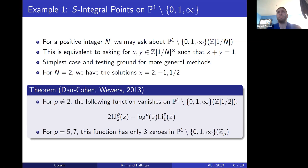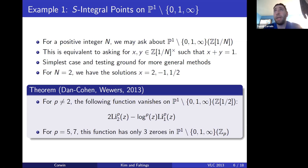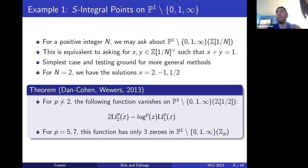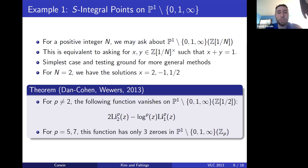A simpler example is S-integral points on P1 minus three points. This is still hyperbolic as an affine curve, and there's a similar theorem that the set of S-integral points on such a curve is finite. For a positive integer N, with S being the set of primes dividing N, we ask about the Z[1/N]-points on P1 minus three points. This is the same as asking about pairs of S-units x and y — meaning the numerator and denominator of x and y are divisible only by primes dividing N — such that x + y = 1. This was the first case in which Minhyong Kim developed his method.